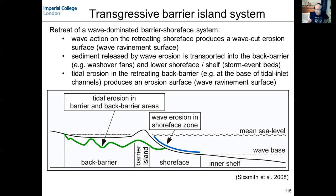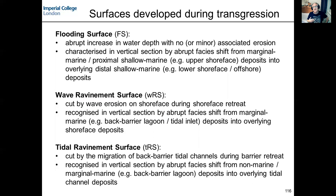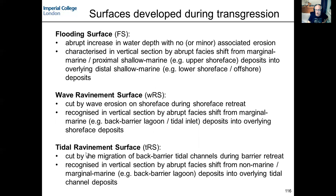Erosion during transgression can be by waves — wave ravinement — producing planar, laterally extensive erosion surfaces since wave base is a fairly uniform depth. Tidal ravinement, by contrast, cuts very deep but localized scours associated specifically with tidal inlet channel locations, so it is not widespread but can be very pronounced where it occurs.